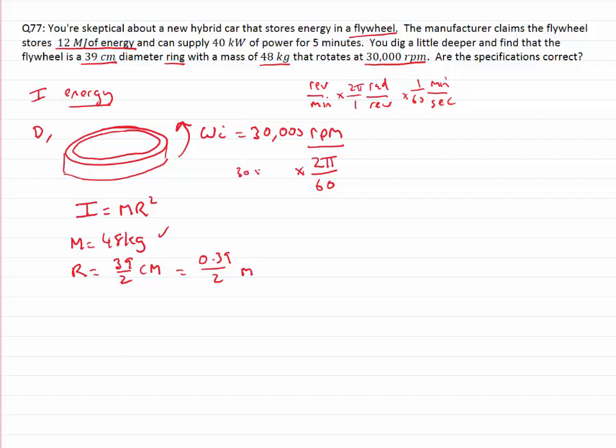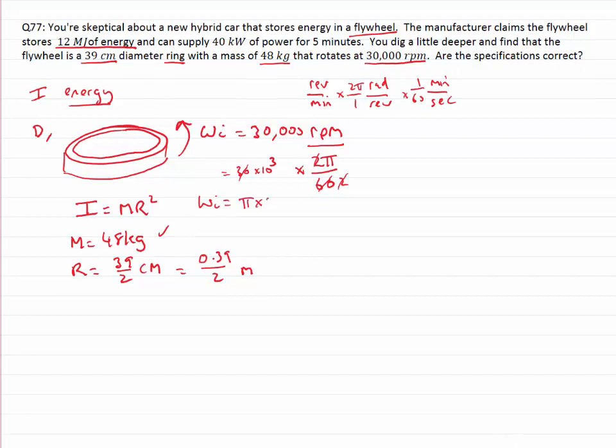So if we take 30 and multiply by 10 to the 3, so we've got 1000 there. We notice that 30 goes into 60 twice. The 2's cancel. And so we end up with that the initial angular velocity is equal to π times 10 to the 3 radians per second.